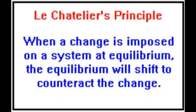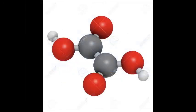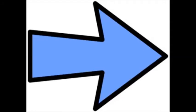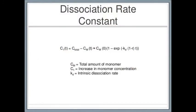Depending on Le Chatelier's factors — temperature, volume, and concentration — the system will either shift left, right, or remain the same to maintain equilibrium. As the concentration of calcium or oxalic acid increases, the equilibrium shifts to the left, forming more calcium oxalate. Referring to Le Chatelier's principle, if the concentration of calcium or oxalic acid decreases, equilibrium will counteract by shifting right and breaking down calcium oxalate to produce more calcium ions or oxalic acid. At equilibrium, the rate of dissociation of calcium ions and oxalic acid will equal the rate of precipitation of calcium oxalate.